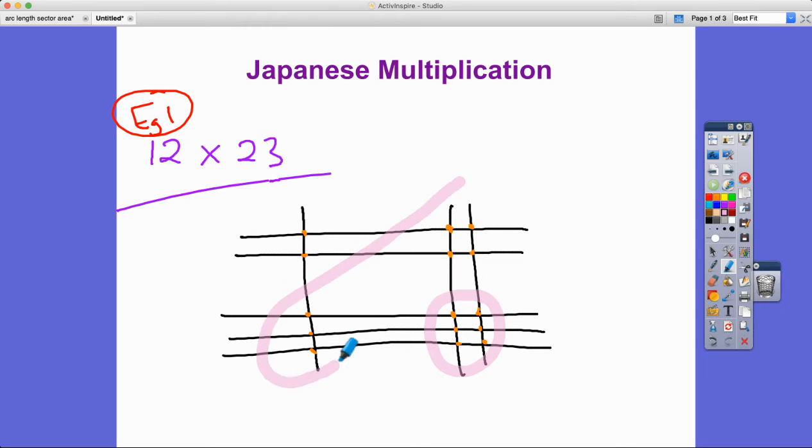The way that it's divided up is we go diagonally for the second number, and then this is the third number. Starting from the bottom right, the answer is 276. You can see this diagonal, we add up these two which is seven intersections altogether, and then two here.